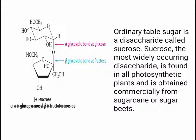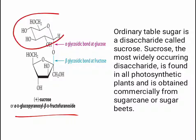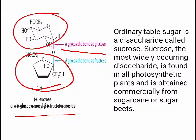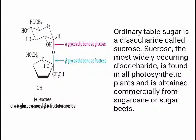Sucrose — ordinary table sugar — is the most widely occurring disaccharide and is found in all photosynthetic plants. It is obtained commercially from sugarcane or sugar beets. In the structure of sucrose, the glucose unit is bonded with the alpha bond and the fructose unit is bonded with the beta bond. In Haworth projection, upward bonds are beta bonds.